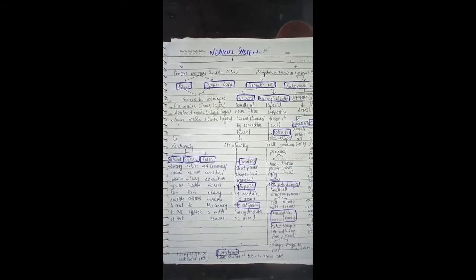Neuroglial cells are special supporting cells of the central nervous system. There are four supporting cells in the central nervous system and two supporting cells in the peripheral nervous system.